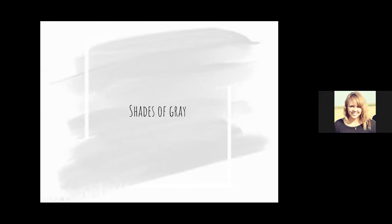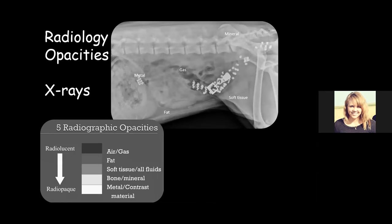Now let's talk about shades of gray on x-rays — radiographs. There are five radiographic opacities. The darkest, most black, is air or gas — you can see this outside the dog's body or within the colon. Then fat, which is dark but slightly whiter than gas. Then soft tissues. Then bone and minerals. Those are our five densities.